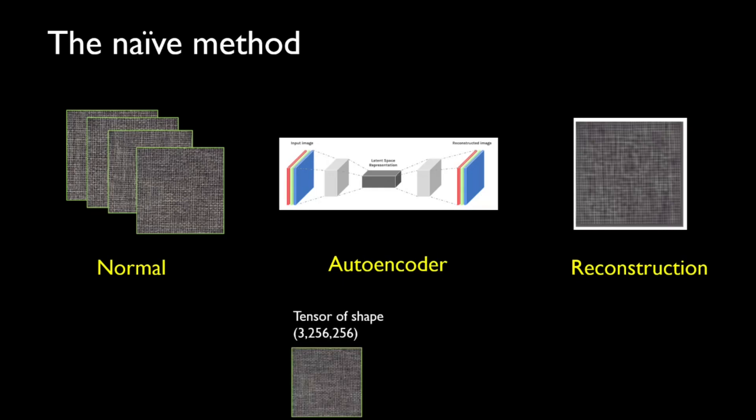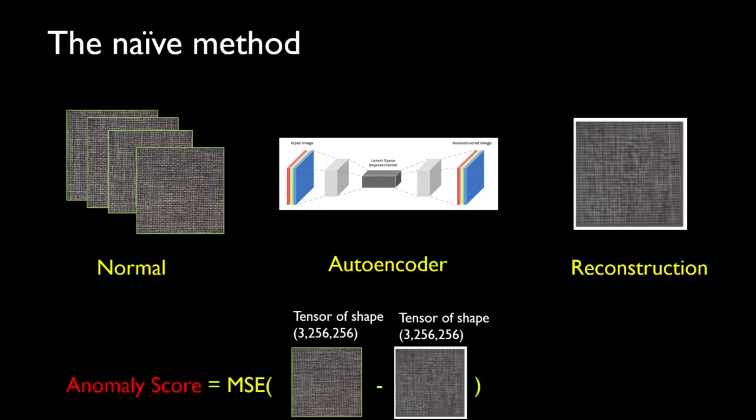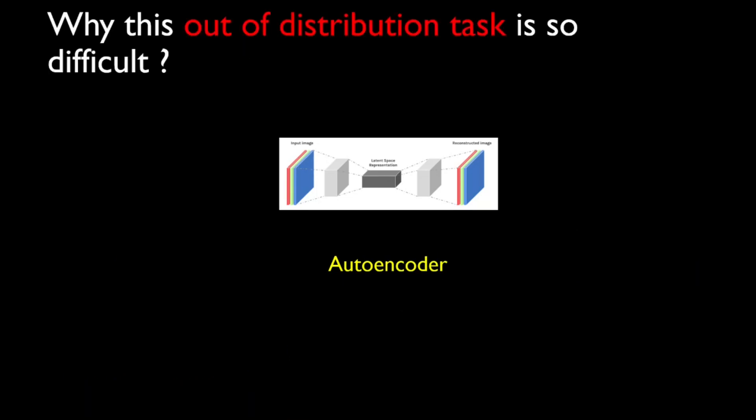But what happens? So finally we'll get a tensor basically will be a shape of 3 cross 256 cross 256. And the reconstruction will also be of the same exact shape. Then to obtain the anomaly score, we just take the mean squared error between those two and reduce it to just a single number.